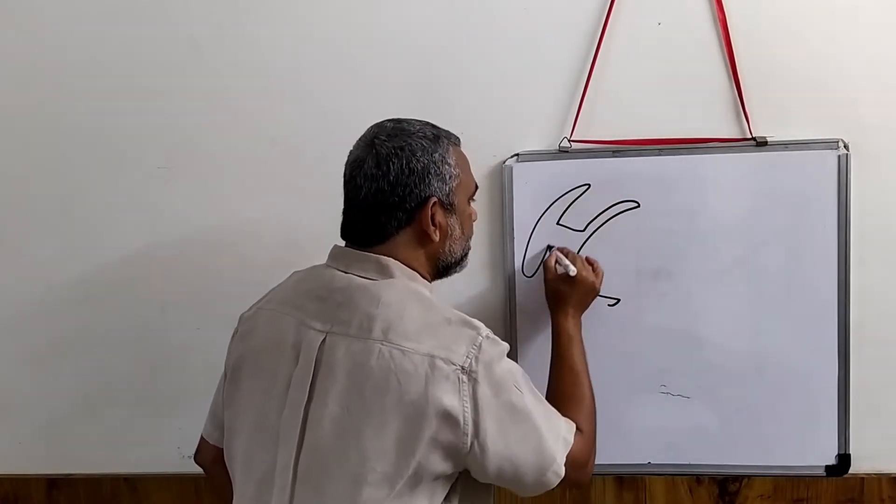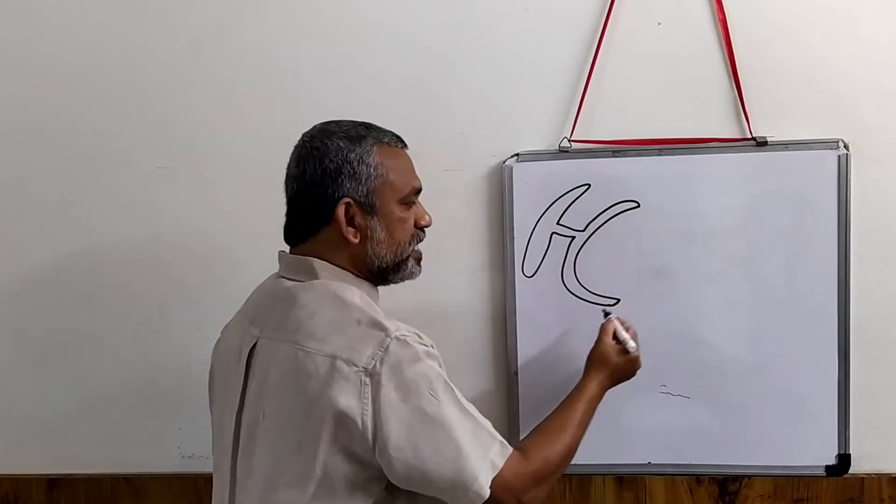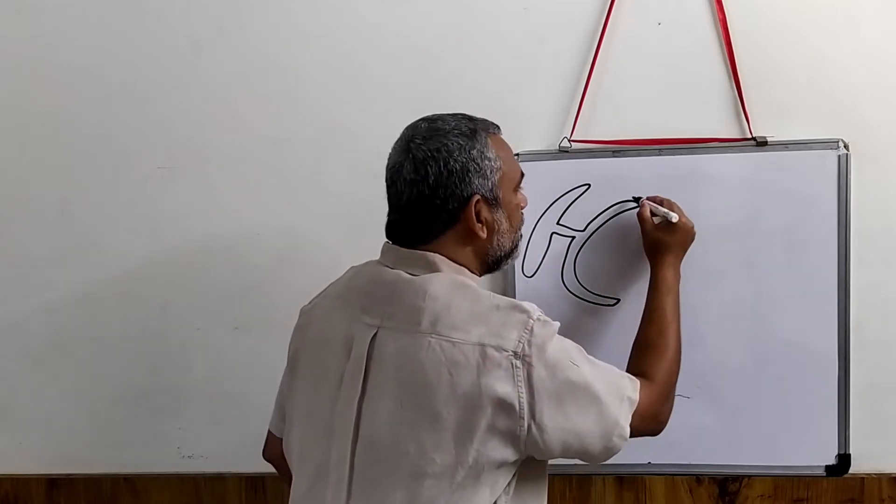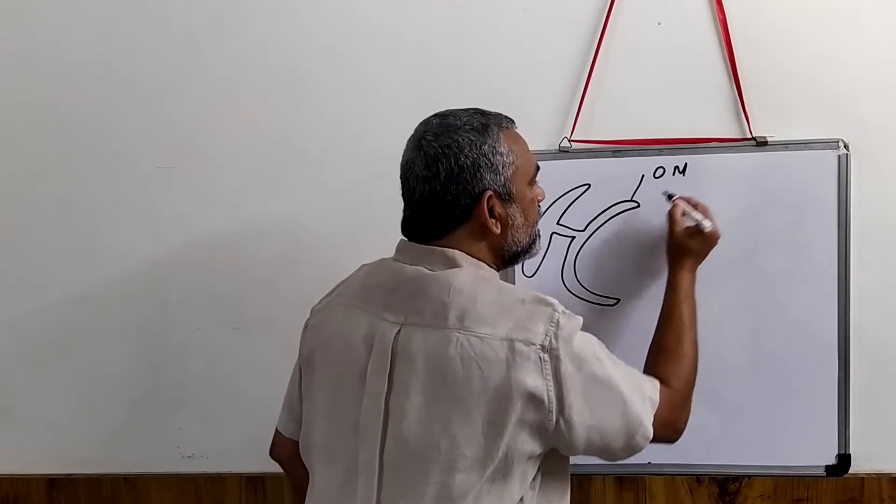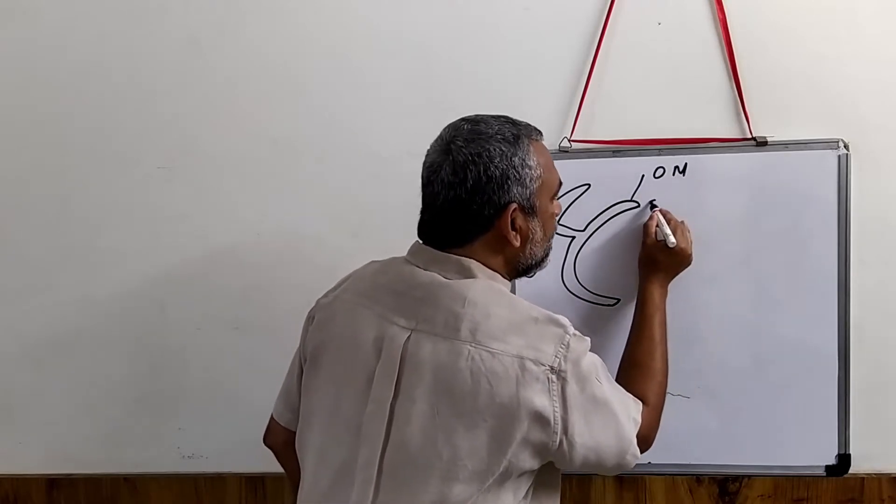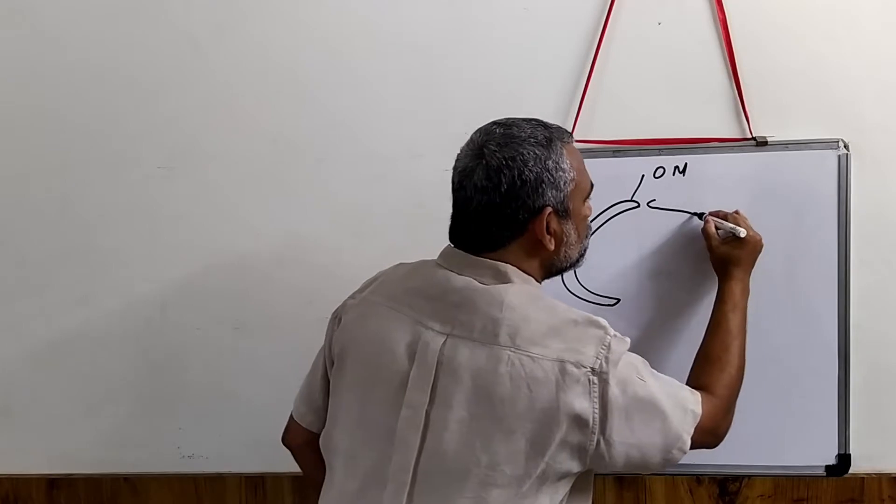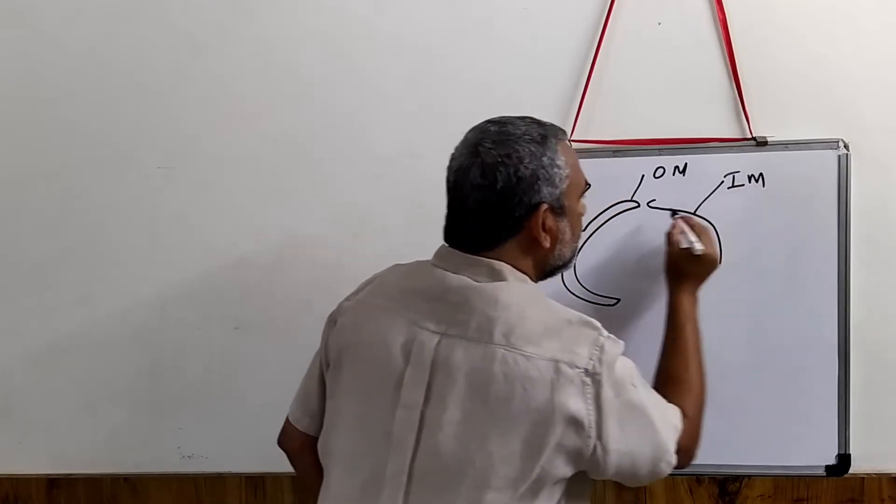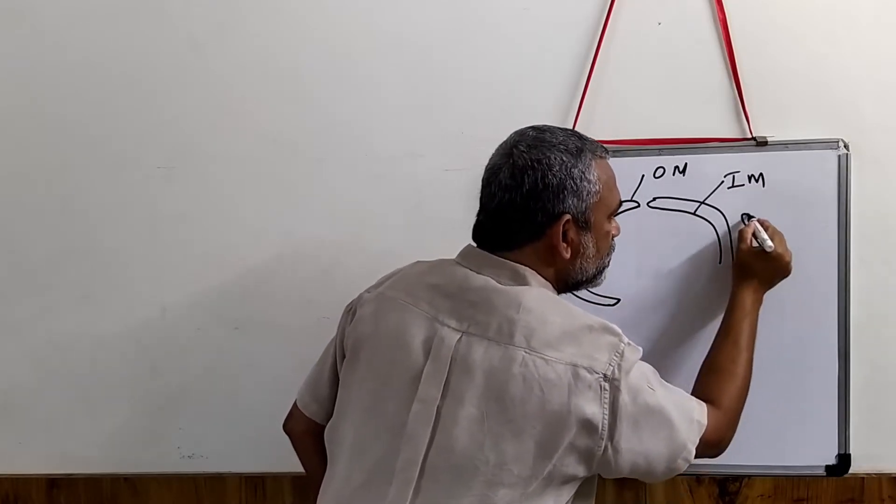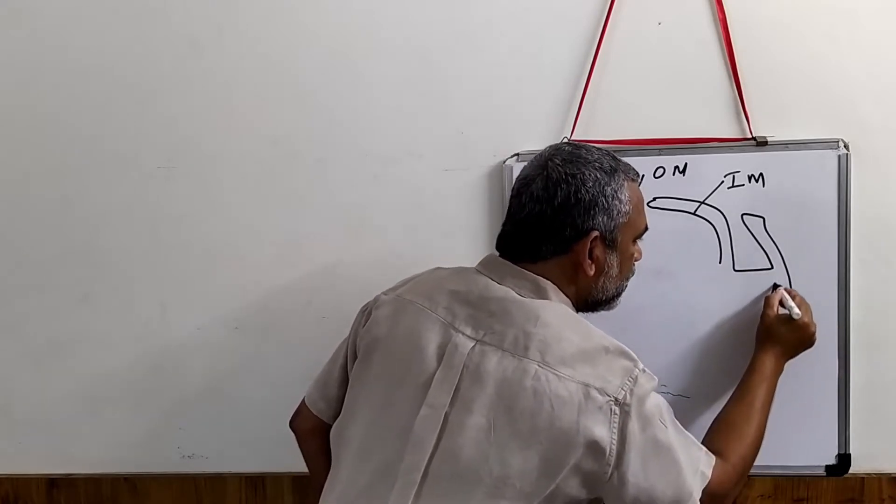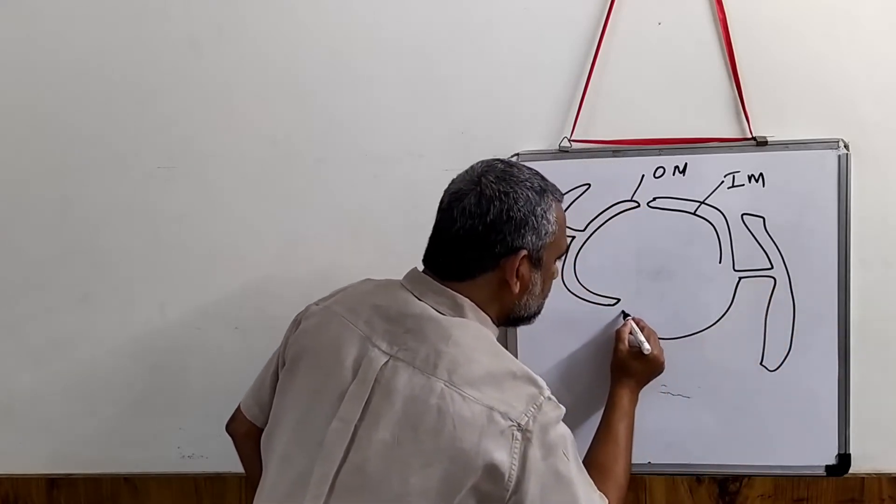The nucleus membrane is continuous with the endoplasmic reticulum. So it can be represented this way. This is going to be a nucleus, this is the outline of membrane, and this is going to be continuous with the endoplasmic reticulum.